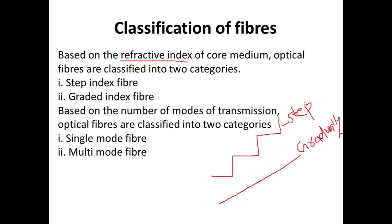Based on the refractive index of the core medium, optical fibers are classified into two categories. First is step index fibers and another is graded index fibers. If the refractive index is changing or varying stepwise, then these fibers are called step index fibers.